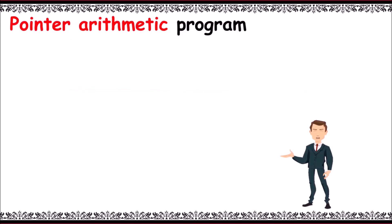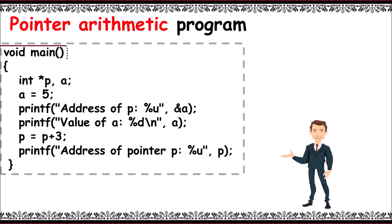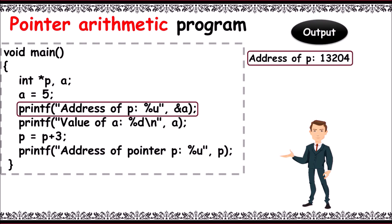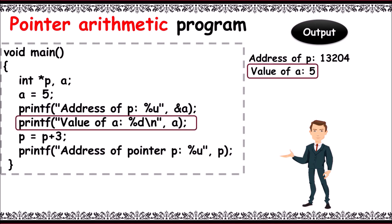Now a pointer arithmetic program would be like: first in main, two variables are declared, int asterisk p comma a. A value is assigned to 5. Printf prints address of p, that is 13204. The value of a is printed, that is value of a equals 5.